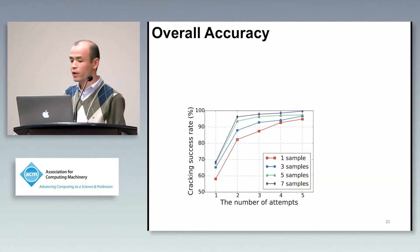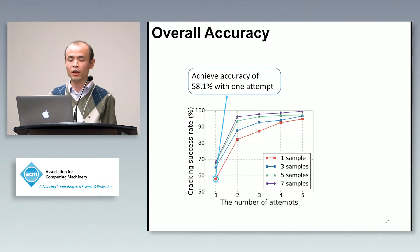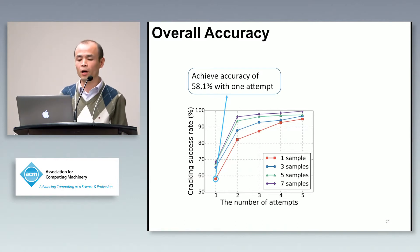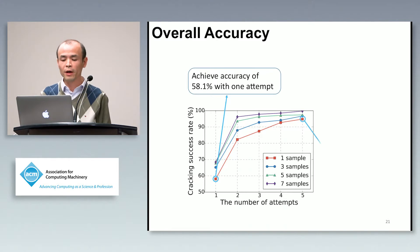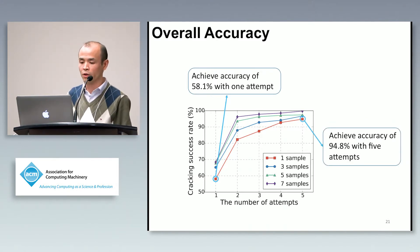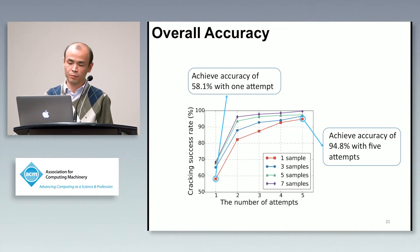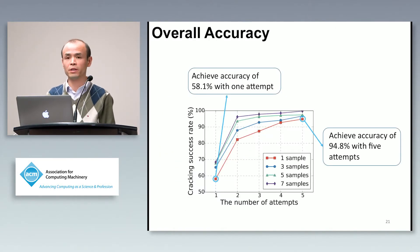Here is the overall accuracy. With one sample and one attempt, our attack achieves accuracy of around 58%. With five attempts, the accuracy reaches around 95%. With more samples — meaning we collect signals from different users twice — we achieve almost 100% accuracy.